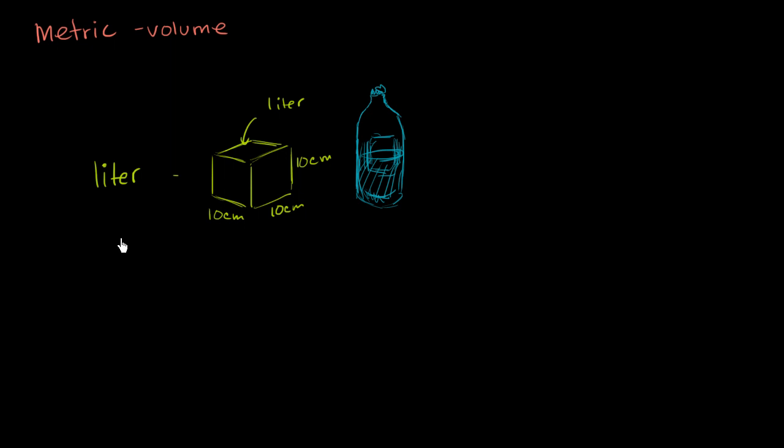Now, if you want to measure things that are a lot smaller than a liter, the typical unit used—and obviously in the metric system you can always use the prefixes deci, centi—but the one that's most typically used is the milliliter. And we've already seen the prefix milli; it means one-thousandth, so this means one-thousandth of a liter. Or another way of thinking about it is 1 liter is equal to 1,000 milliliters.